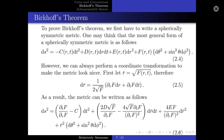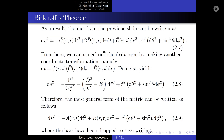To prove Birkhoff's theorem, we first have to write a spherically symmetric metric. One may think that the most general form of a spherically symmetric metric is as follows. However, we can always perform a coordinate transformation to make the metric look nicer. For example, we can set r-bar equal to square root of f. Therefore, dr-bar is as follows, and we can write the metric in terms of dr-bar and dt. These functions can simply be replaced as arbitrary functions of r-bar and t. As a result, the metric can be written in a simpler form. From here, we can cancel the dr-bar dt cross term by making another coordinate transformation, yielding the most general form of the metric, where the bars have been dropped to save writing.